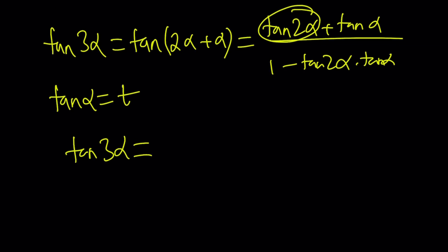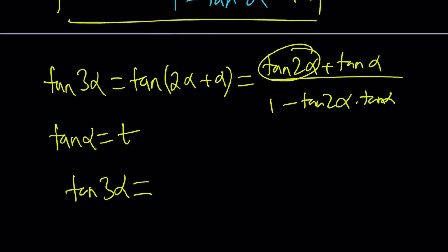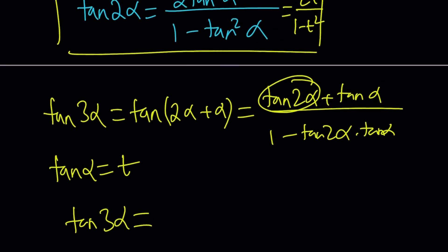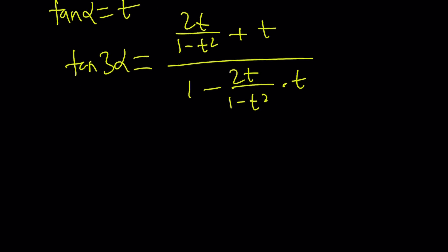I think it'll be helpful if we set tangent alpha equal to t and tangent 3 alpha, just leave it like that. So it's going to be tangent 2 alpha. Tangent 2 alpha is 2t or not 2t, right? 2, 2, 2. So we're going to replace tangent 2 alpha with 2t over 1 minus t squared. Tangent alpha with t, this with 1 minus 2t over 1 minus t squared times t.